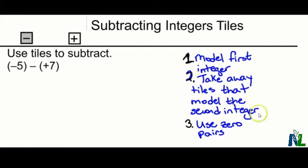So here I have the three steps that I used in the previous examples. The first step, model your first integer. So I need to model negative 5. So I need 5 of these negative tiles. And I have them right here.